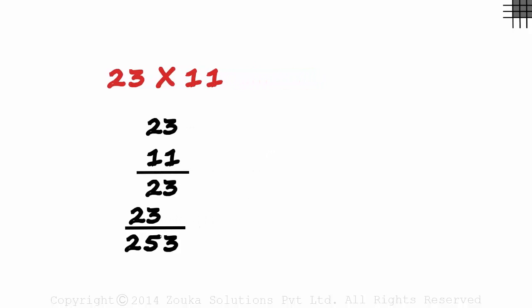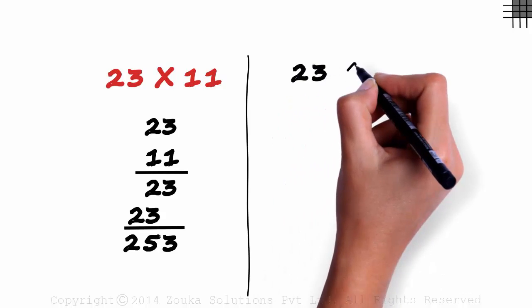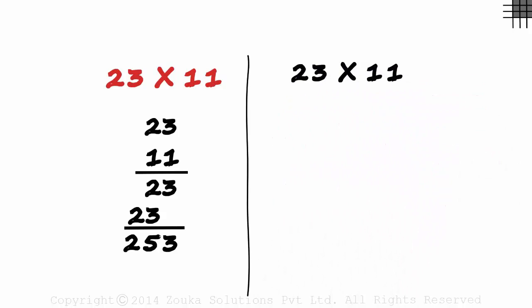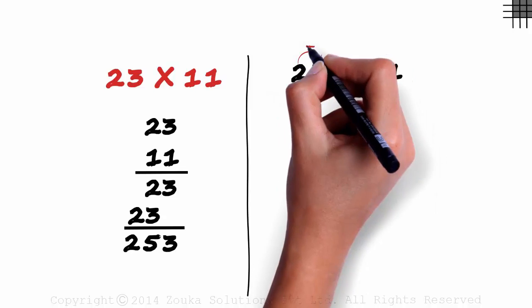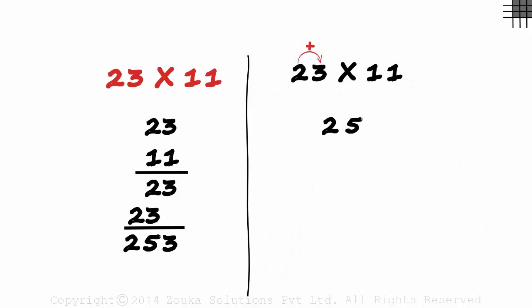Let's move on to the shortcut of multiplying a number with 11. 23 times 11. To begin, we write the first digit as is: 2. To get the next digit, we simply add 2 with 3: 5. And then we write the last digit: 3. Bingo! We have our answer: 253. It's easy!